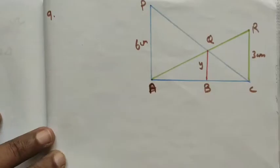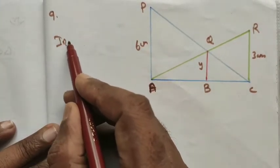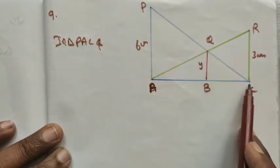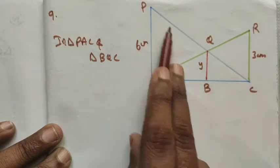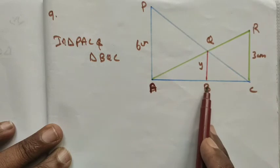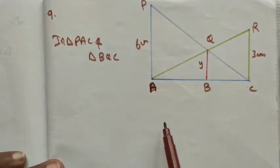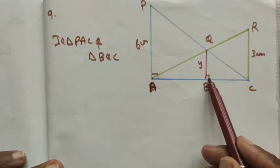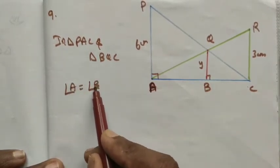Let's see the solution. I choose triangle PAC and triangle BQC. The blue line represents triangle APC, and line BQ and C forms the other triangle. We want to prove these two triangles are similar. Since the poles are erected perpendicular to AC, this is a right angle — angle A equals angle B equals 90 degrees.